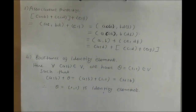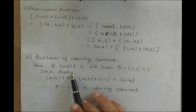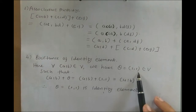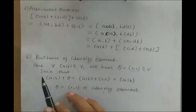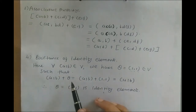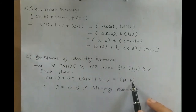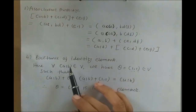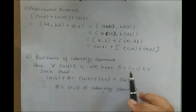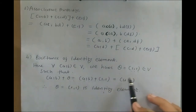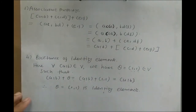Fourth, existence of an identity element: for all (A,B) in V, let theta = (1,1). Since 1 > 0, theta belongs to V. Then (A,B) + (1,1) = (A·1, B·1) = (A,B). So theta = (1,1) is the identity element, and this property is satisfied.